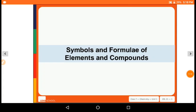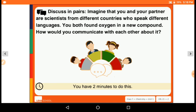Now the next is symbols and formulas of elements and compounds. Imagine that you and your partner are scientists from different countries who speak different languages. You both found oxygen in a new compound. So how would you communicate with each other about it?